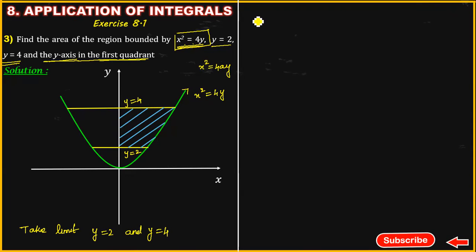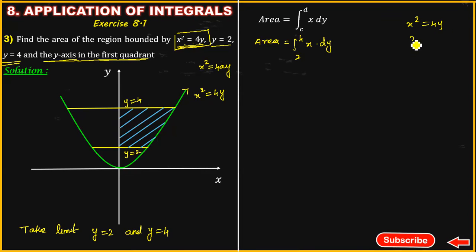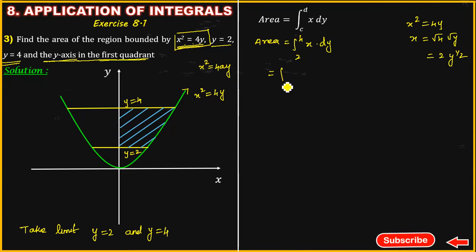Using the formula: area equals integration of c to d of x dy. So, area equals integration from 2 to 4 of x dy. From the given equation x squared equals 4y, we get x equals the square root of 4y, which equals 2y to the power of 1/2. So we integrate 2y to the power of 1/2 dy from 2 to 4.